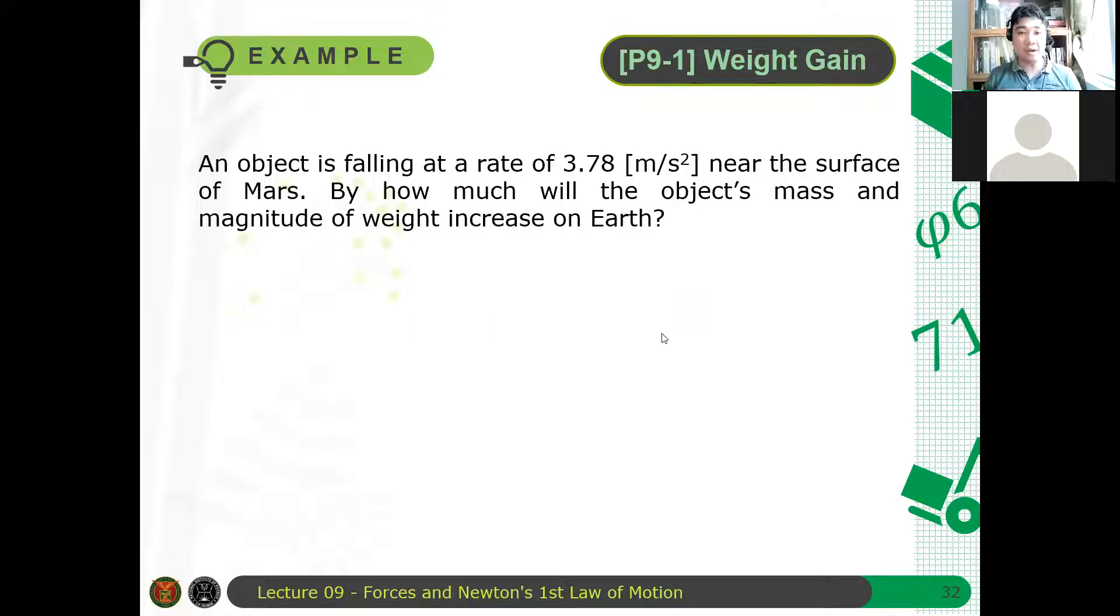Okay, so let's have an example. A weight gain. An object is falling at a rate of 3.78 meters per second squared near the surface of Mars. How much will the object's mass and magnitude of weight increase on Earth? How do you answer this question?